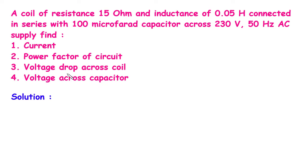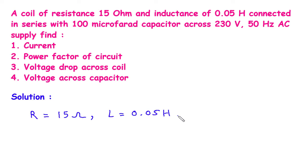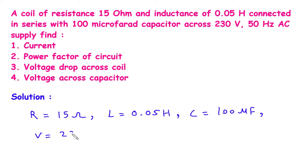First, we will write what is given. Resistance R is equal to 15 ohm. Inductance L is equal to 0.05 henry. Capacitance C is equal to 100 microfarad. Voltage V is equal to 230V. Frequency F is equal to 50Hz.